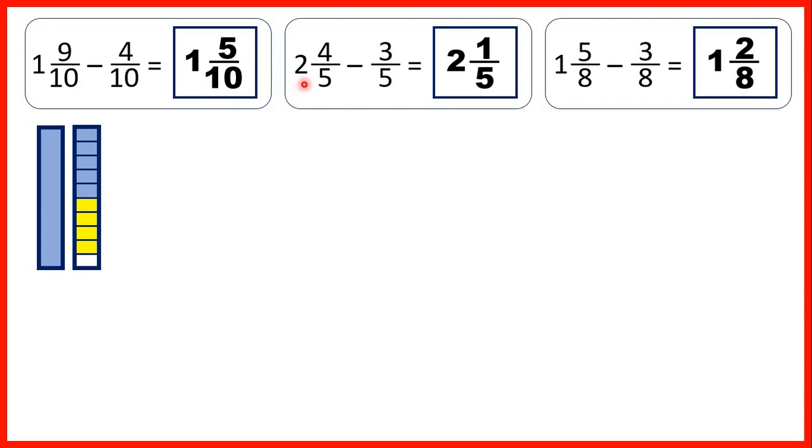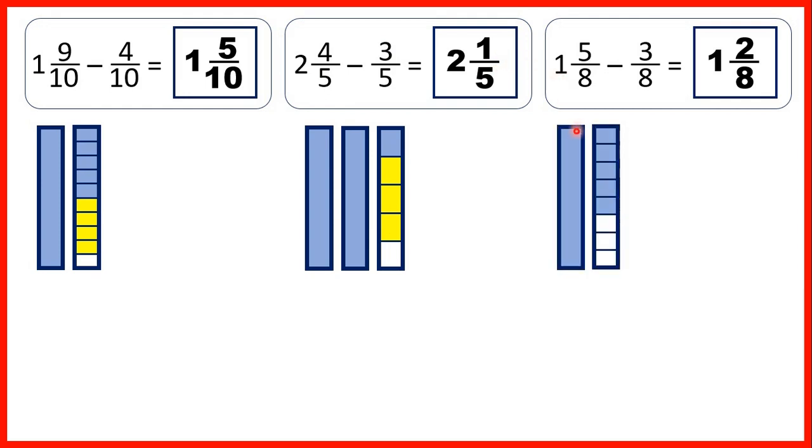Then we had 2 wholes and 4 fifths. We subtracted 1, 2, 3 fifths to get 2 and 1 fifth as our answer. Then we had 1 and 5 eighths. We subtracted 1, 2, 3 of those eighths to give us one whole and 2 eighths left in blue. So that's our answer.